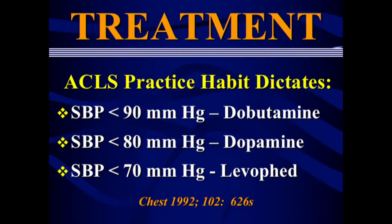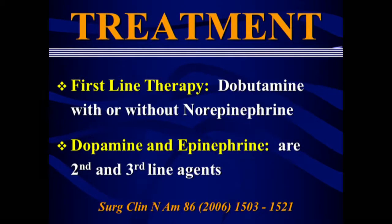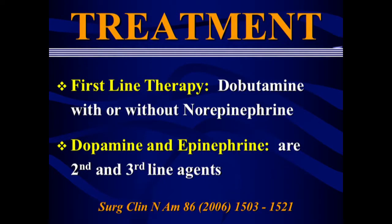This is what ACLS has said since 1992, rubber-stamped for every edition: systolic blood pressure less than 90, dobutamine; less than 80, dopamine; less than 70, levophed. But our cardiothoracic surgeons who deal with this daily say first line is dobutamine and call for norepinephrine at the bedside. That's what we should be doing.